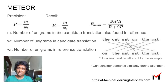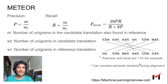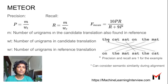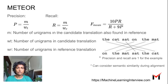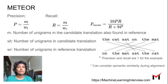The way METEOR works is: first compute precision and recall, which requires finding an alignment between words of the candidate and reference sentences. For example, candidate 'the cat sat on the mat' and reference 'on the mat sat the cat' — you find alignments between words. This can be exact word matches or semantic similarity using embeddings, synonyms, or a stemmer. There can be multiple possible alignments and we want to pick the best one.